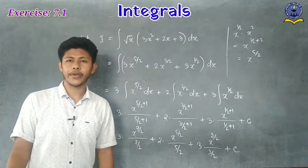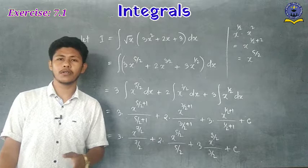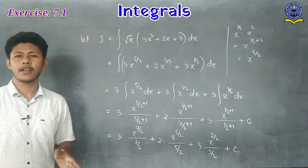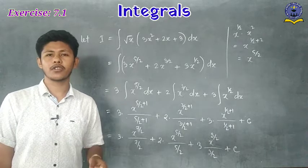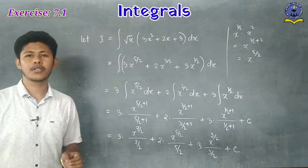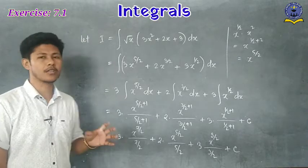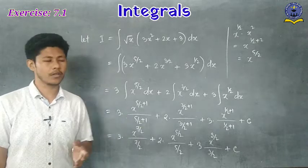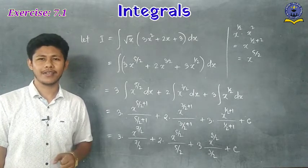All three questions from Exercise 7.1 are done. Your task is to complete the remaining questions in Exercise 7.1. In our next class, we will start the substitution method. The three main methods of integration are: substitution, integration by parts, and partial fractions. Thank you.